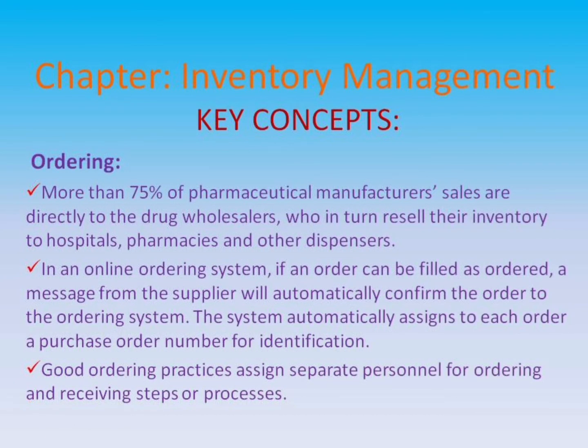Ordering: more than 75% of pharmaceutical manufacturers' sales are directly to drug wholesalers, who in turn resell their inventory to hospitals, pharmacies, and other dispensers. In an online ordering system, if an order can be filled as ordered, a message from the supplier will automatically confirm the order to the ordering system. The system automatically assigns a purchase order number to each order for identification. Good ordering practices assign separate personnel for ordering and receiving steps or processes.